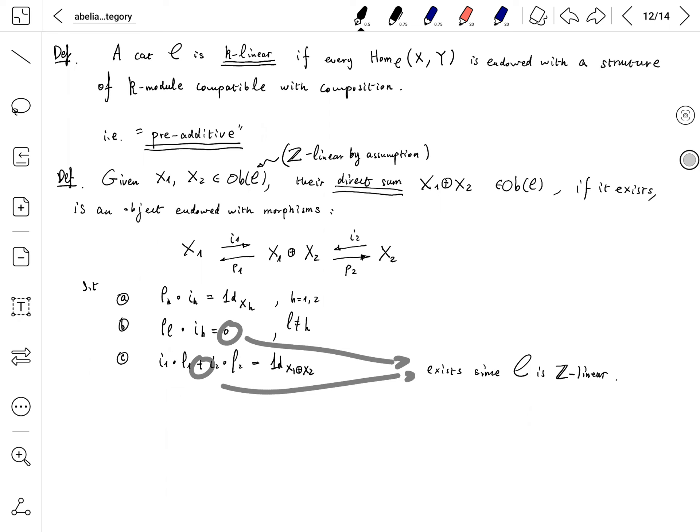The category is called pre-additive or K-linear if every hom-set has a structure of K-module. In particular, Z-linear means the hom-set has group structure, and this is compatible with composition.